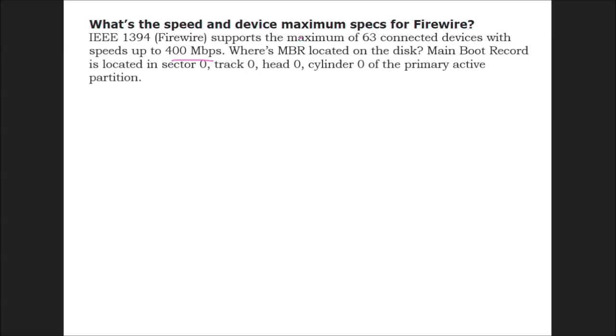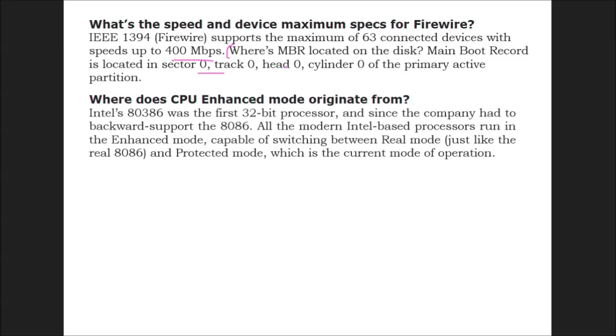Where is the MBR located on the disk? The Master Boot Record is located in sector 0, track 0, head 0, cylinder 0 of the primary active partition.